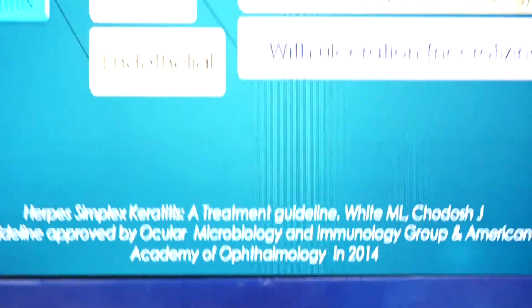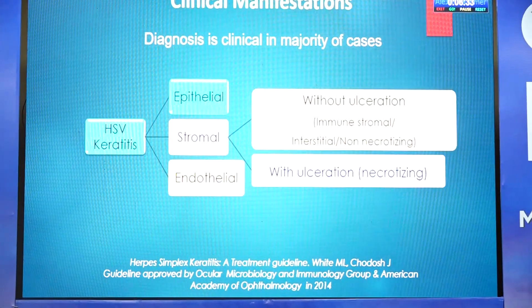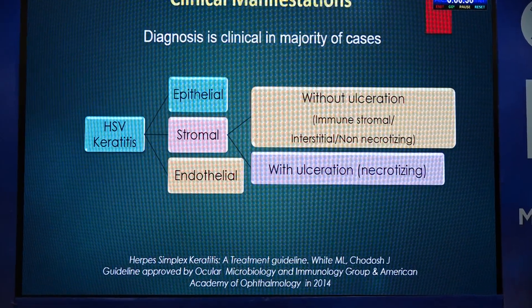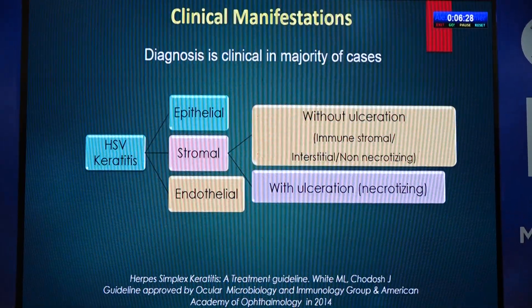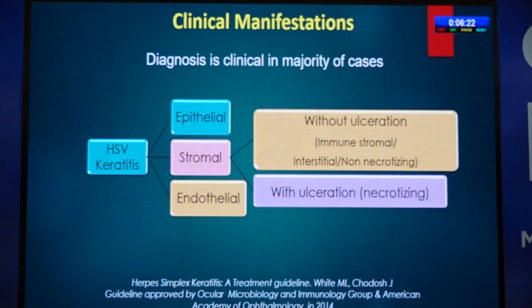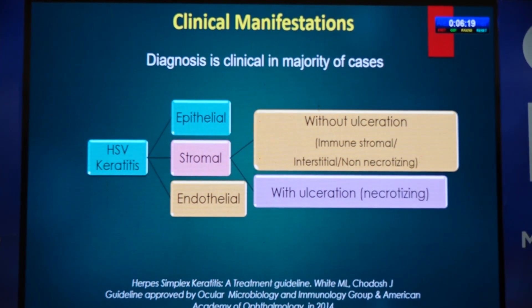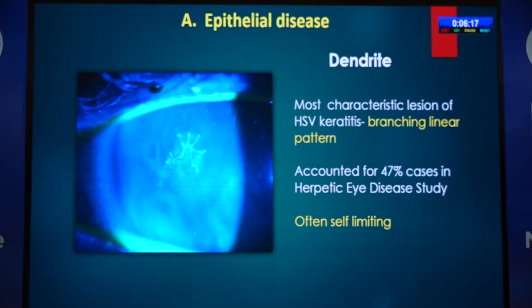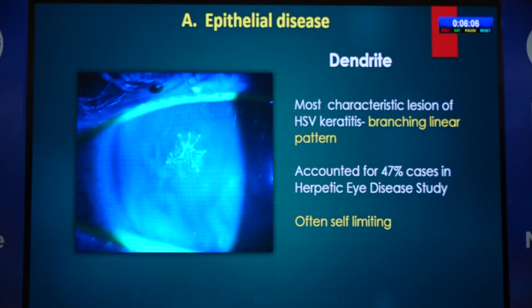The clinical manifestations: diagnosis is mainly clinical. If you can recognize the look, HSV keratitis does not really require investigations except occasional PCR for keratouveitis. It affects all layers of the cornea — epithelium, stroma, and endothelium — as well as the uveal tract. The dendrite is the most characteristic lesion, with a classic branching linear pattern. However, in secondary or tertiary hospitals, this may have already resolved and you may just see footprint scars — which is often self-limiting.